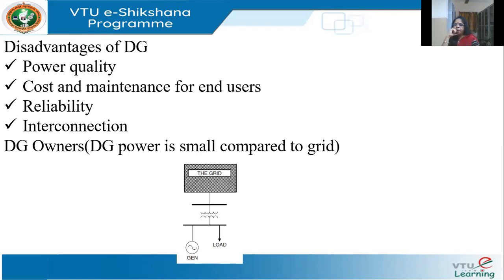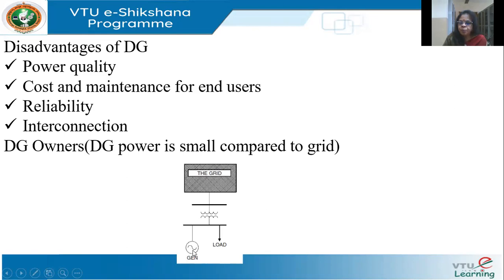If you look up distributed generation, you normally find two representations. The first shows DG owners as small-time players — the grid is shown as a big rectangular block and the local generation is a small generator, intentionally drawn to indicate that DG power is very small compared to the grid. Domestic players can use whatever they are generating to meet their own load, and if there is excess, they can try to sell it to the grid.